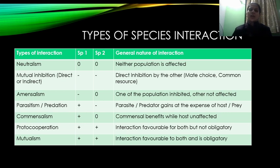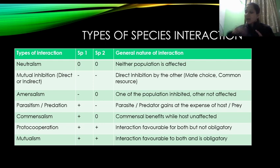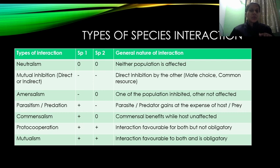Aspergillus niger बनाता है Penicillin। Penicillin क्या करता है? आजू-बाजू के जो bacteria हैं उनको kill करता है। So one population is inhibited — bacteria is inhibited — and the other (Aspergillus niger) is not affected। It is releasing the penicillin which is an antibiotic जो bacteria को kill कर देता है। So Penicillin produced by Aspergillus niger is an example of Amensalism।